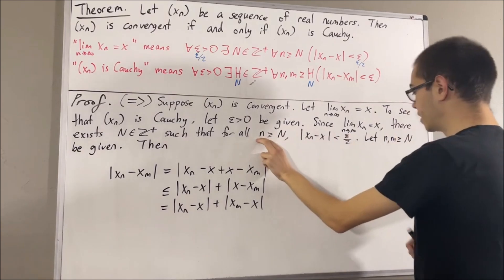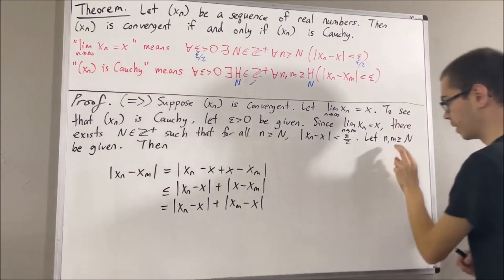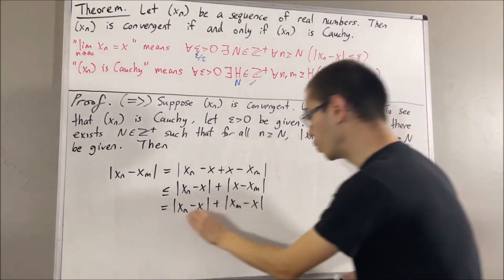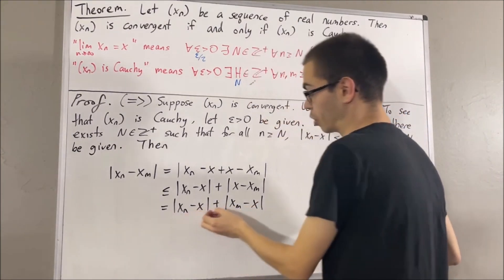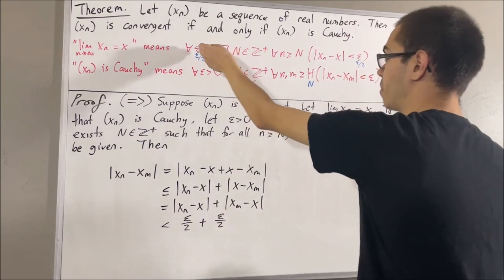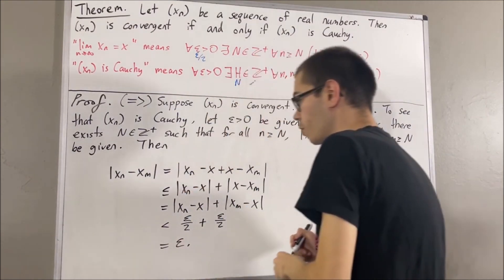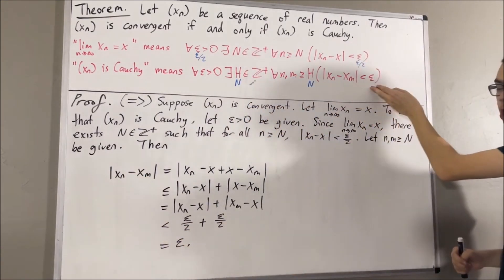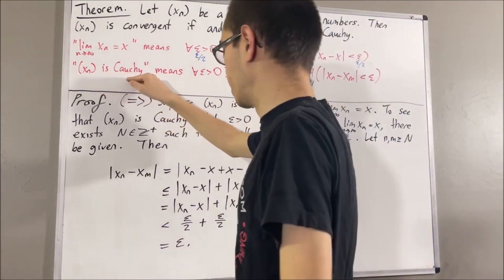Since n and m are both greater than or equal to capital N: if we take n to be n, we have that this is less than epsilon over two. Also, if we take n to be m, we have that this is less than epsilon over two. So both of these are less than epsilon over two, which means their sum is less than epsilon over two plus epsilon over two. That's the reason why we took epsilon to be epsilon over two in this statement — we know that when we add these two together, we get epsilon. And so we have shown that the absolute value of xn minus xm is less than epsilon, which is exactly what we wanted to show. This proves that xn is a Cauchy sequence.